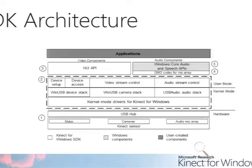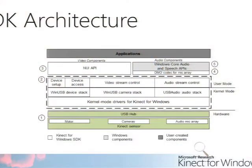This is the SDK architecture, and I'm going to work through it from the bottom up. It's a classic device, driver, runtime, application architecture. At the bottom, the Kinect itself contains three or four USB devices internally: the VGA camera, the 3D camera, the audio microphone array, and motor control. There's actually a miniature USB hub inside the device itself.